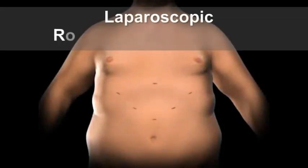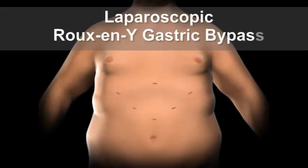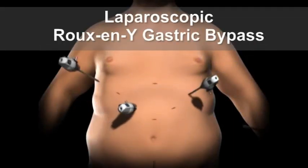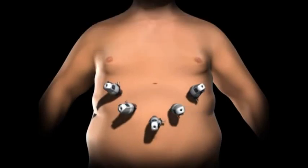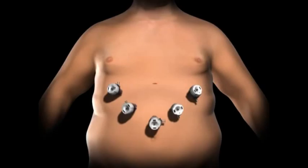In access to the abdominal cavity, small incisions are created on the abdomen. Trocars, which serve as passageways for the surgical instruments, are placed into the incisions.